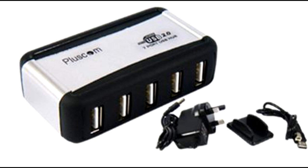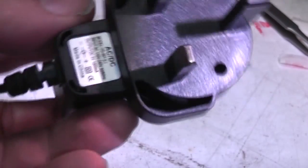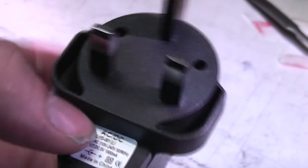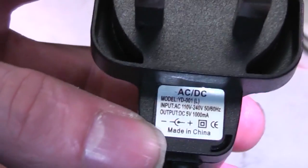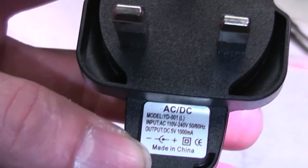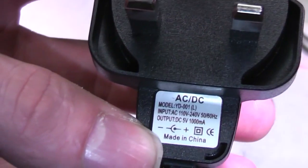So you wonder, well if the whole thing's four pounds shipped to the UK what's the budget for the power supply? Here's the power supply, UK 13 amp. The label, the only approvals it just says CE, no other approvals on it. Five volt DC, 1000 milliamps and of course made in China.